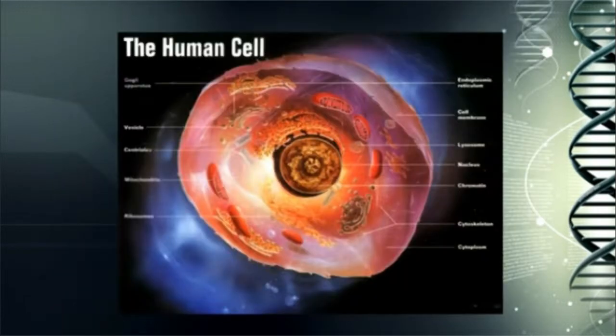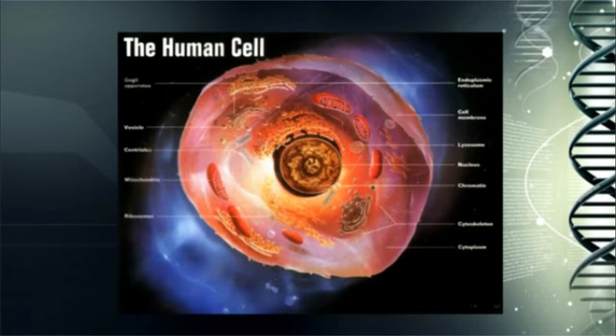Now take a look at this — this is an artist's rendering of the human cell. What we find out is that the components and the design of the human cell match perfectly with the design, the layout, the numbers — everything from the wilderness tabernacle matches exactly what is in practically every cell in our body.